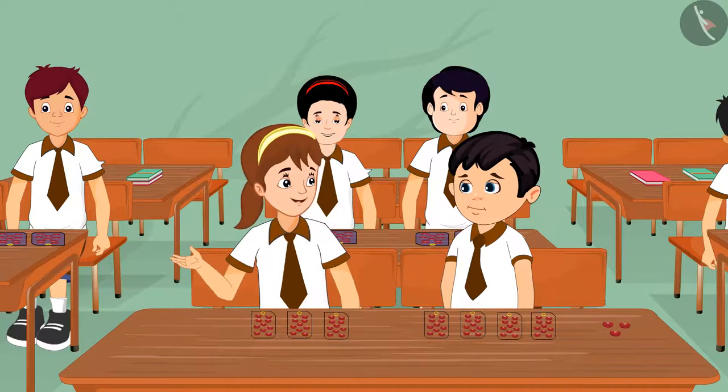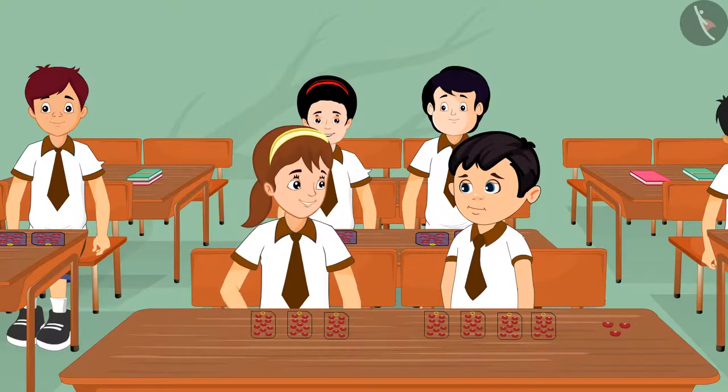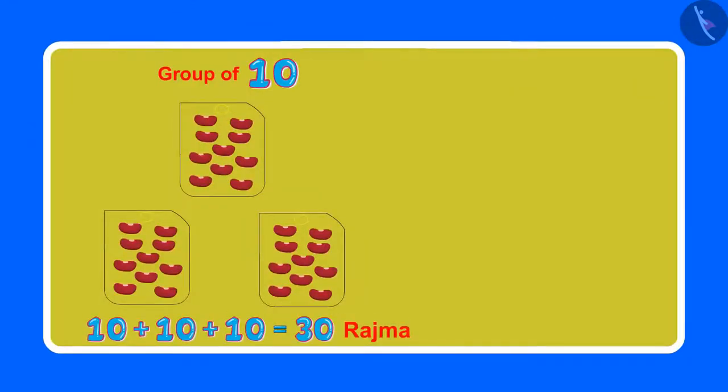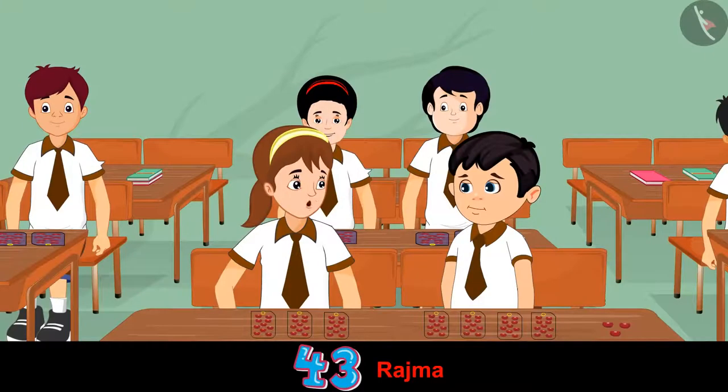Chotu, I have made 3 packets. In 3 packets, there are 10, 10 rajma beans each. Now I want 4 rajma beans more. Then the total will be 43 rajma beans. Right, Chotu?